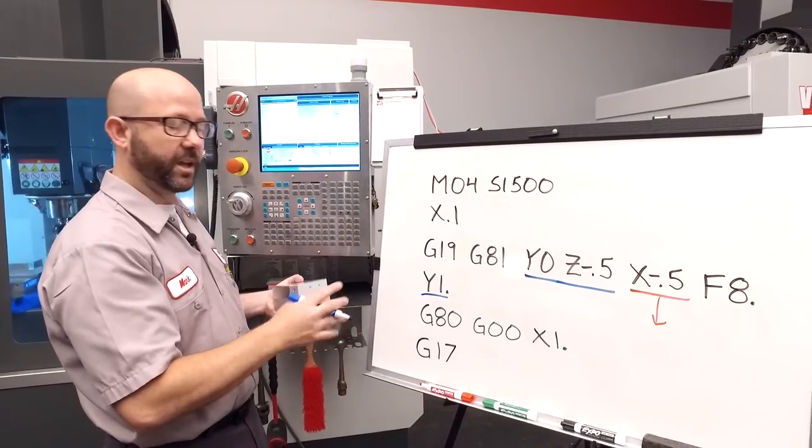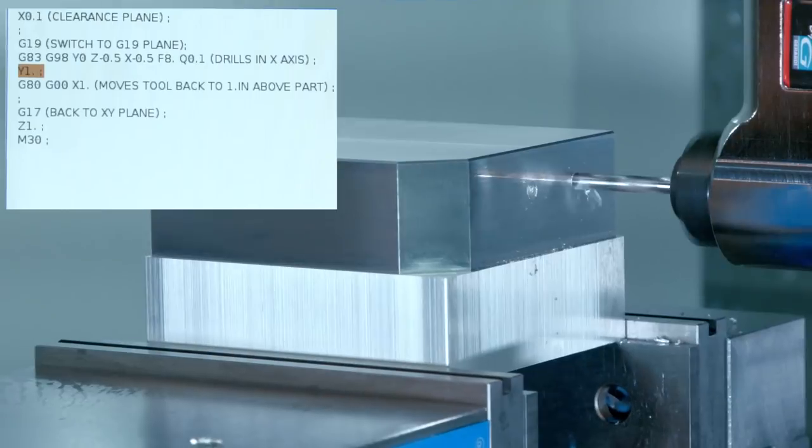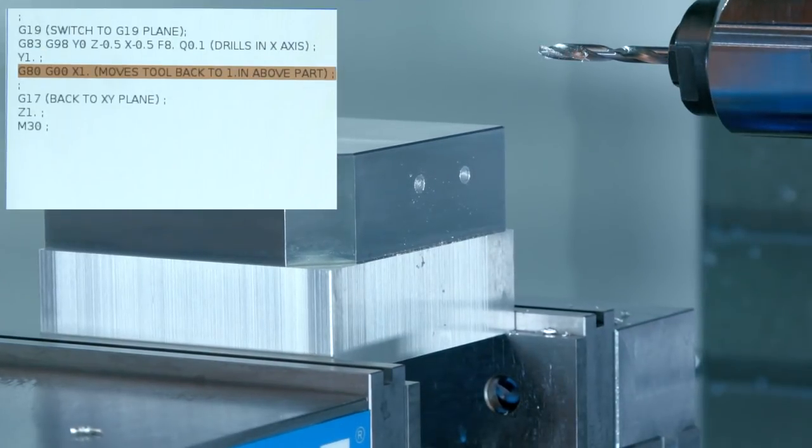When the can cycle is done, we cancel it with a G80, G0 like normal, and then we move the tool to a safe position. In this case, X1.0.